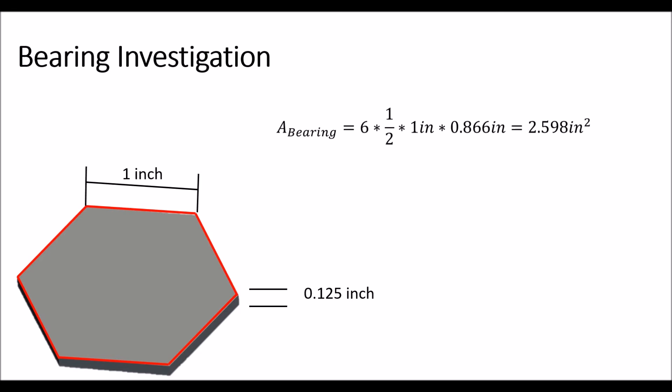The area of that will be comprised of six equilateral triangles with sides of 1 inch. To get that, we'll take 6 times one half the base, which is 1 inch, times the height, which if you do a little bit of trigonometry, you'll find that it's 0.866 inches. That'll mean that we have a total of 2.598 inches squared for the area.